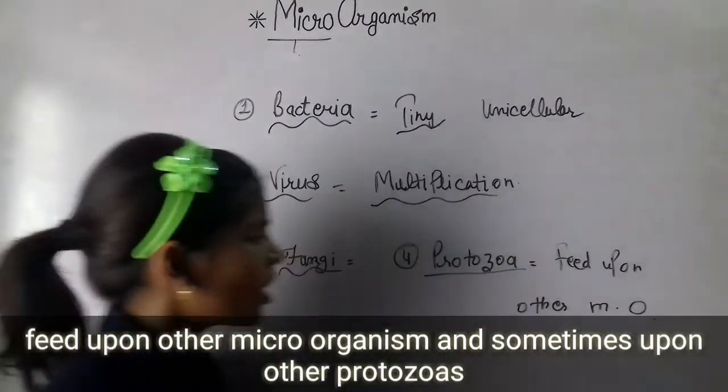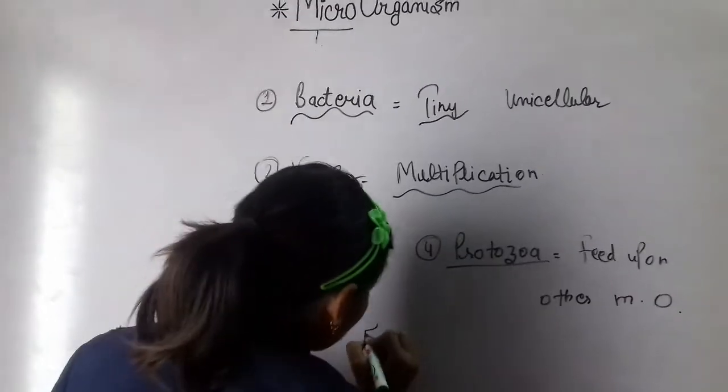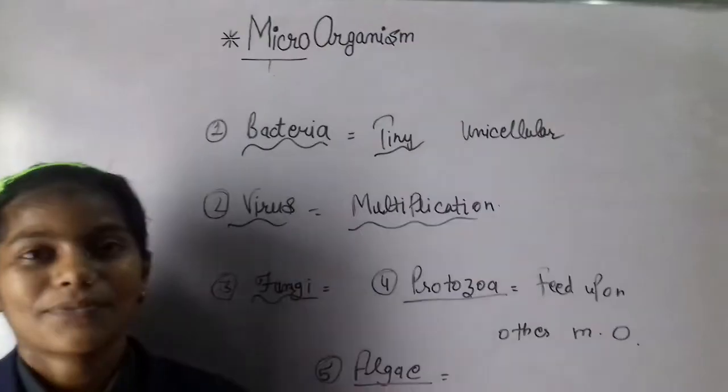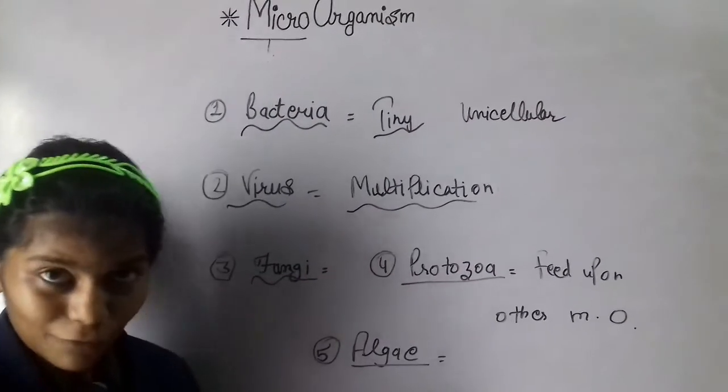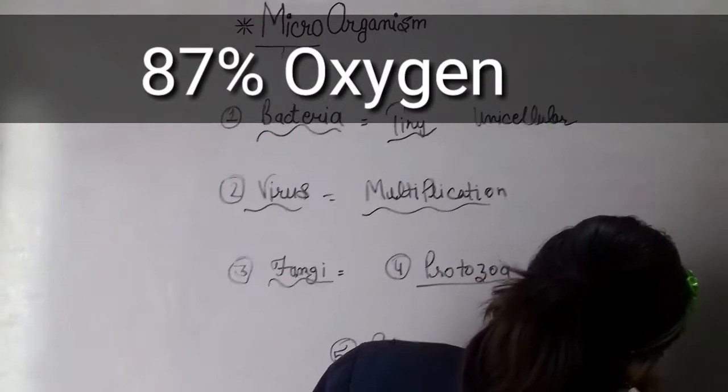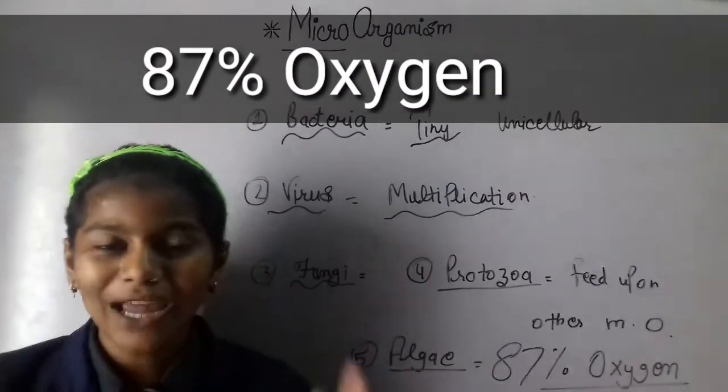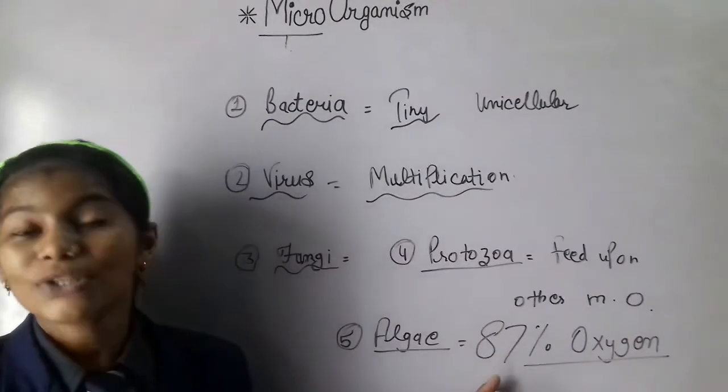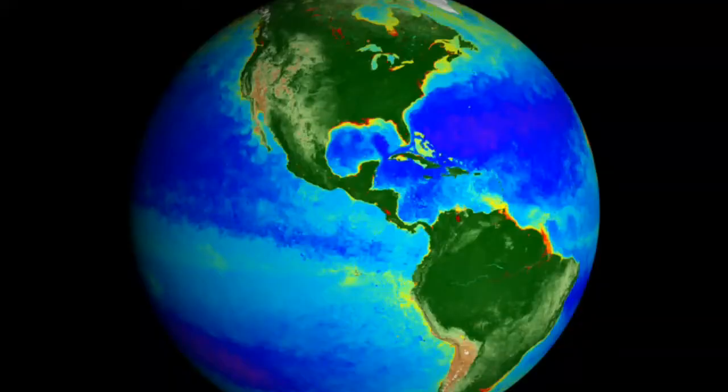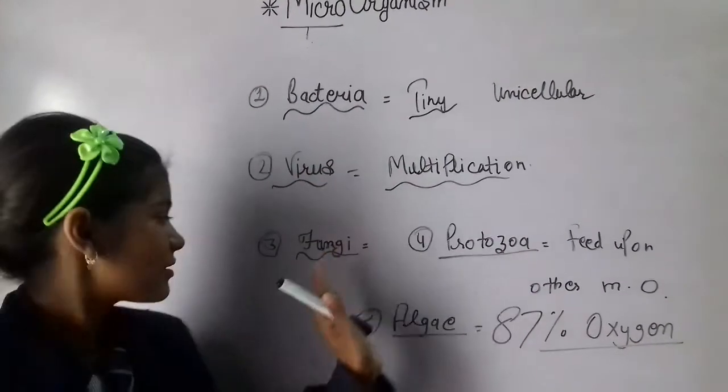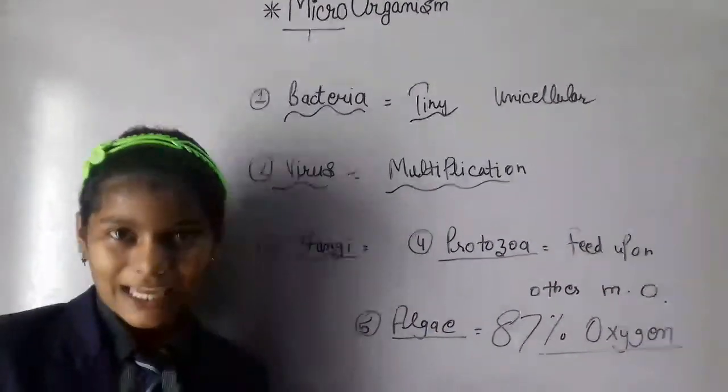Fifth type is algae. Algae is also wonderful because it is very helpful. It produces 87% oxygen on Earth. You can realize that algae is very, very important for us because it produces 87% oxygen of the whole world. So these were five types of microorganisms: bacteria, viruses, fungi, protozoa, and algae.